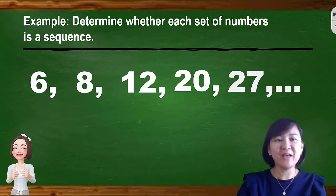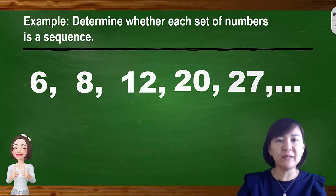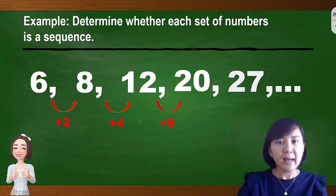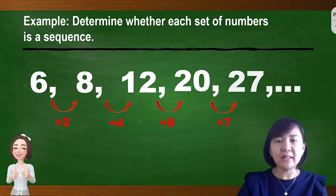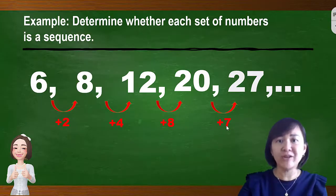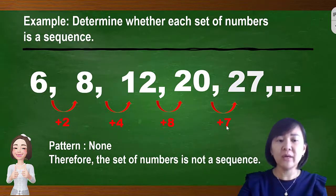Another set of numbers: 6, 8, 12, 20, and 27. We must identify the pattern to determine whether it's a sequence. From 6 to 8 is plus 2. From 8 to 12 is plus 4. From 12 to 20 is plus 8. From 20 to 27 is plus 7. There is no consistent pattern — we get plus 2, plus 4, plus 8, and plus 7. Therefore, the set of numbers is not a sequence.